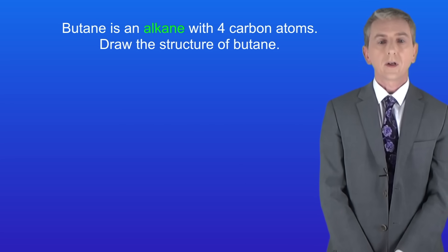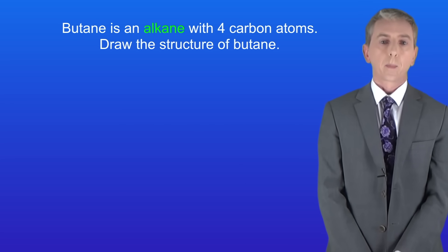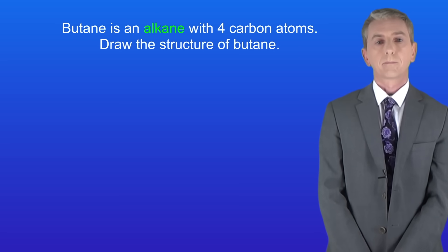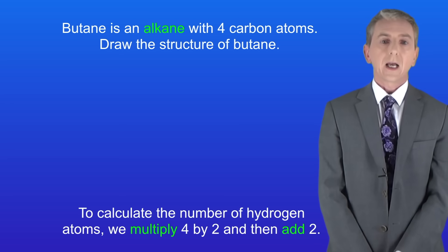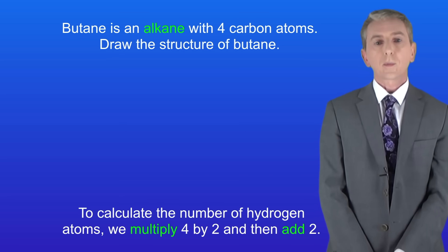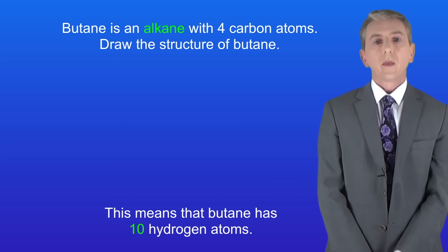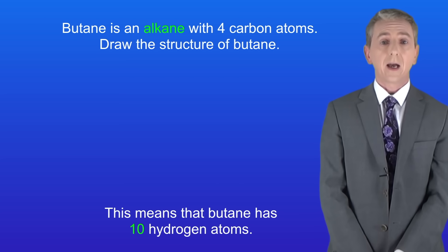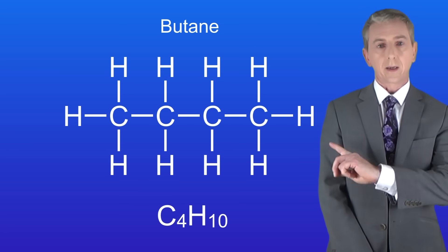Try this question: butane is an alkane with 4 carbon atoms — draw the structure of butane. Pause the video and try this yourself. Butane has 4 carbon atoms, so n equals 4. To calculate the number of hydrogen atoms, we multiply 4 by 2 and then add 2. This means that butane has 10 hydrogen atoms. I'm showing you the structure of butane here.